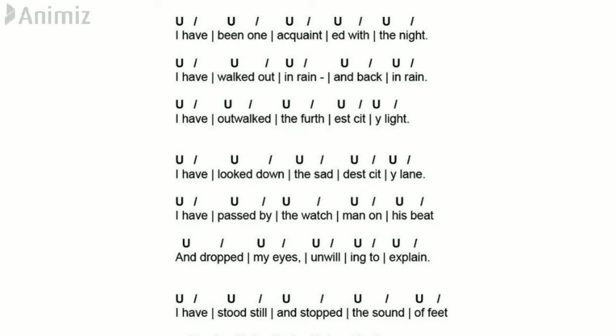Let me break down the line: 'I have' — 'I' is unstressed, 'have' is stressed. 'Been one' — 'been' is unstressed, 'one' is stressed. 'Acquainted' — 'a' and 'ek' are unstressed, 'quaint' is stressed, and 'ed' is a separate unstressed beat. 'With the' — 'with' is one foot, 'the' is unstressed. 'The night' — 'the' is unstressed, 'night' is stressed. I want you to pause the screen, write down the lines without the symbols, read them aloud, and try to identify which syllables are stressed and unstressed and locate the five feet yourself.